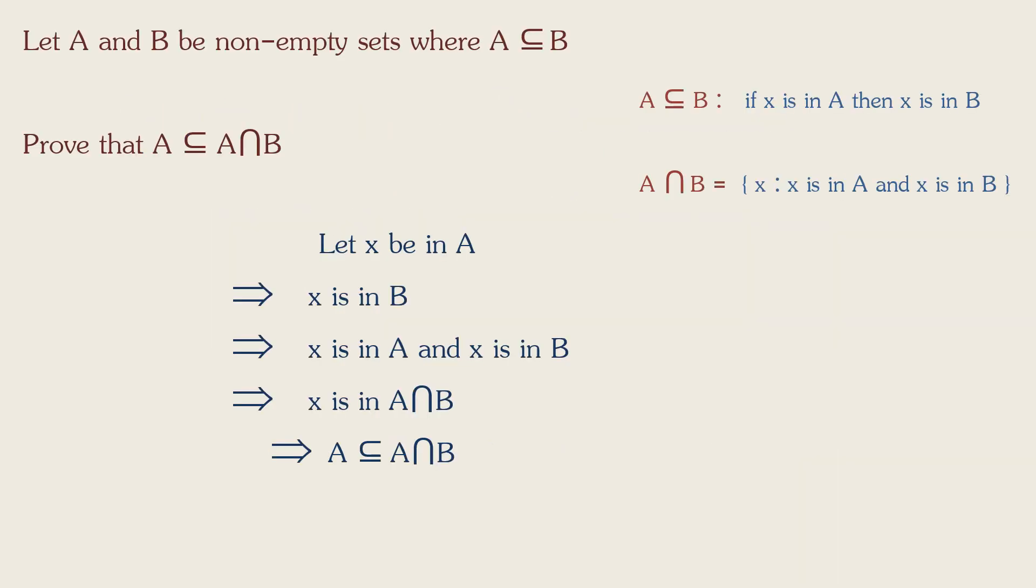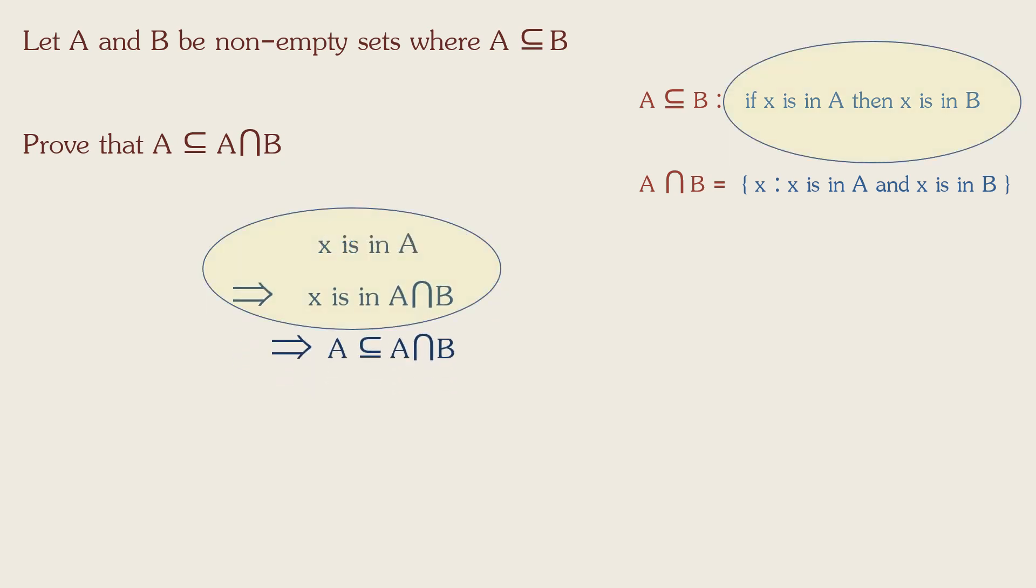So each implication we made followed from our definitions, and due to transitivity, we can say that X is in A implies that X is in A intersection B, which is just another way of writing our definition for A as a subset of A intersection B.